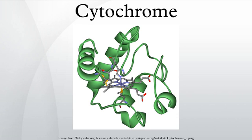Several kinds of cytochrome exist and can be distinguished by spectroscopy, exact structure of the heme group, inhibitor sensitivity, and reduction potential. Three types of cytochrome are distinguished by their prosthetic groups. The definition of cytochrome C is not defined in terms of the heme group. There is no cytochrome E, but there is a cytochrome F, which is often considered a type of cytochrome C.